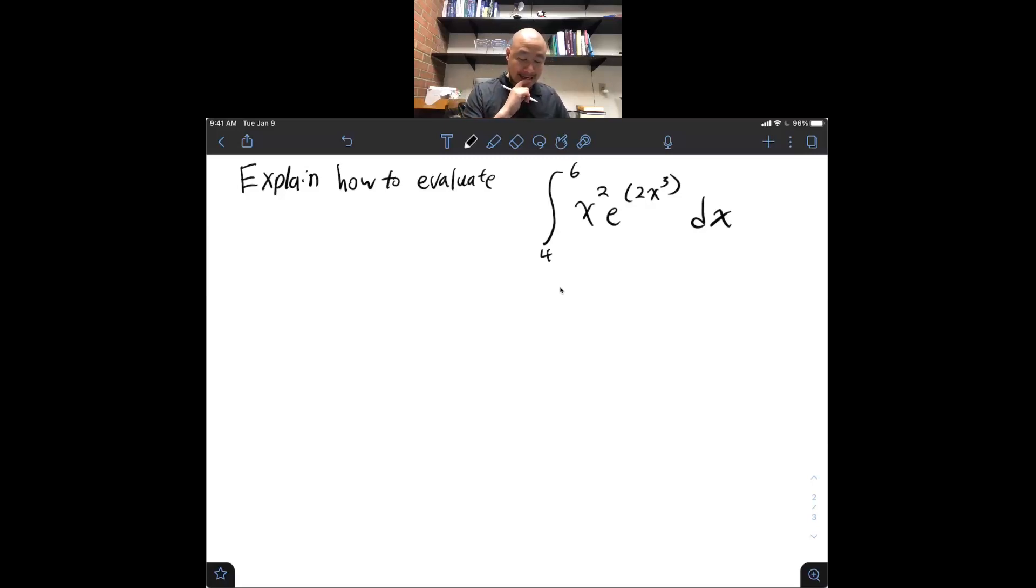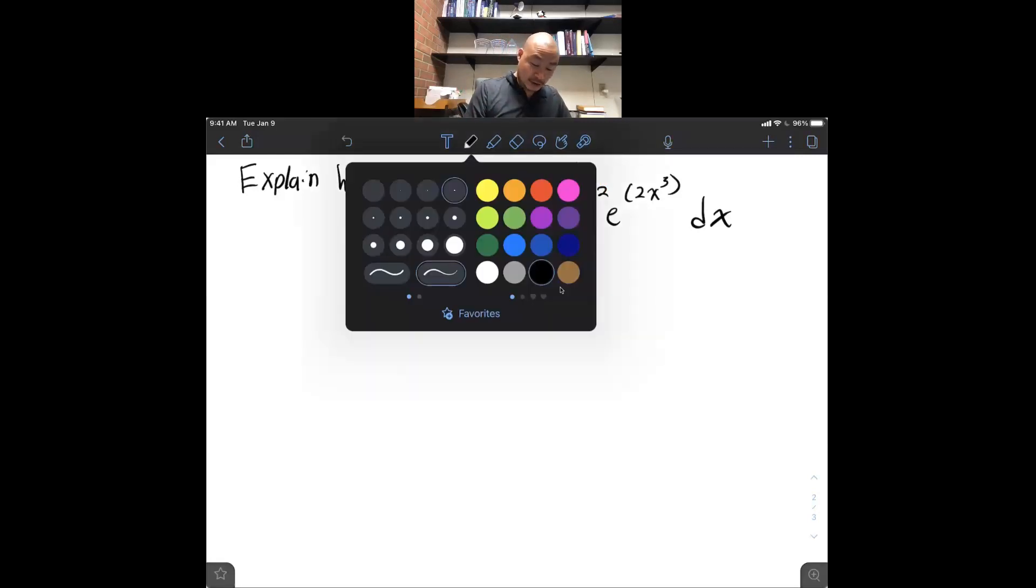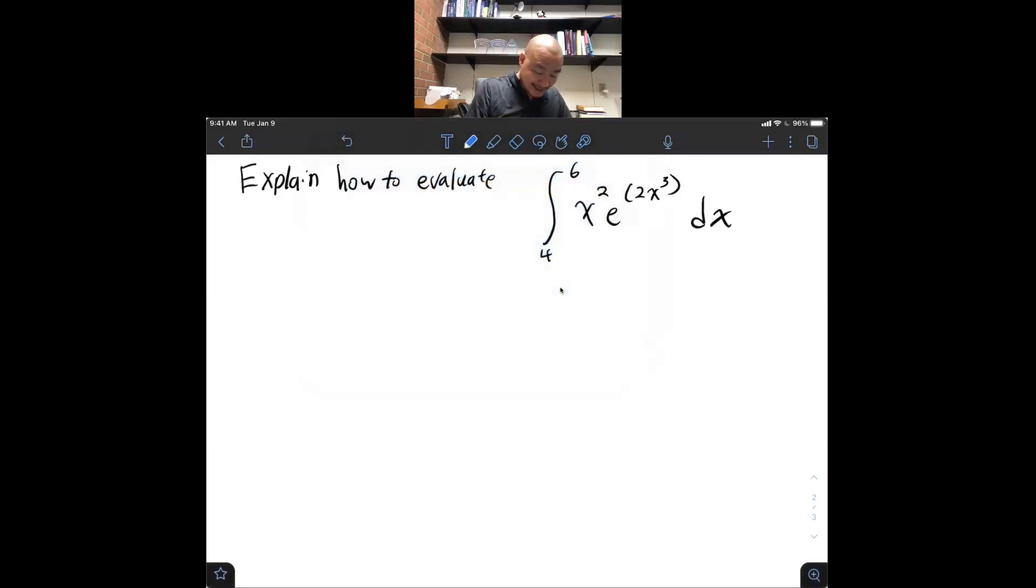And once again, I am looking for an appropriate choice for substitution. And I note that e to the u is a readily anti-differentiable expression. And the derivative of 2x cubed is going to be a quadratic. It will be an expression of x squared. And this is a quadratic expression. So, that is a reasonable choice. So, testing that out,